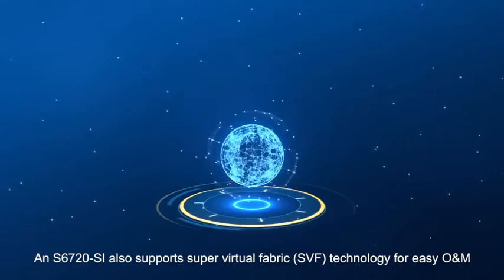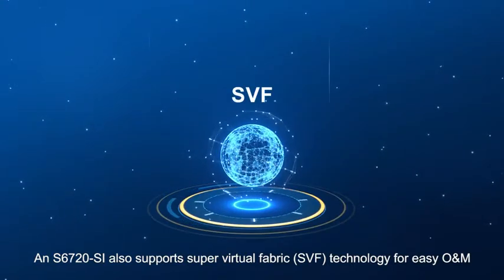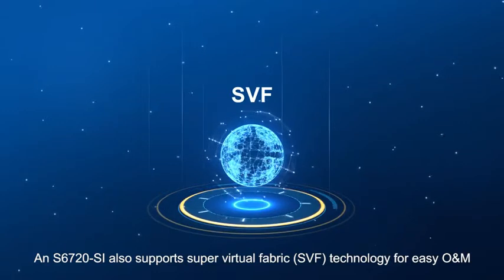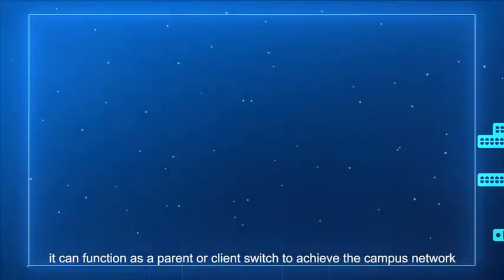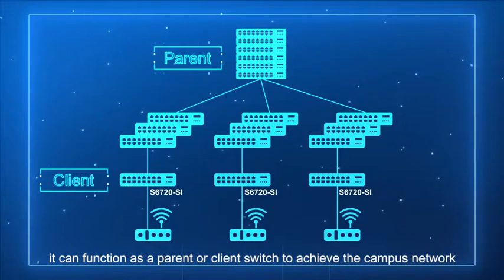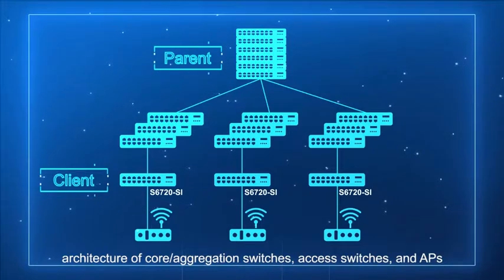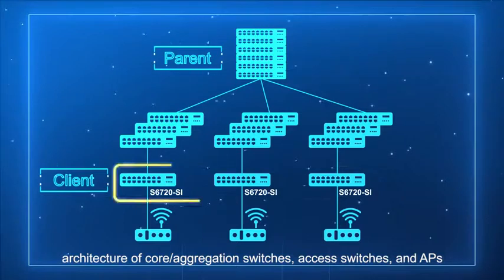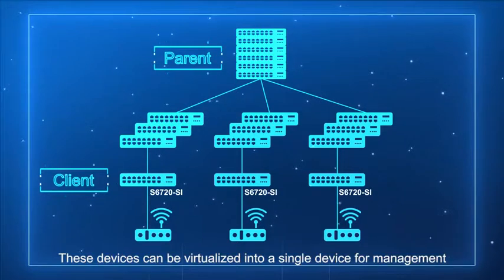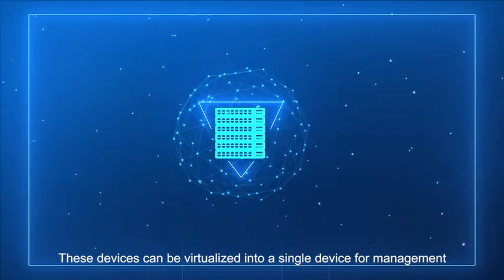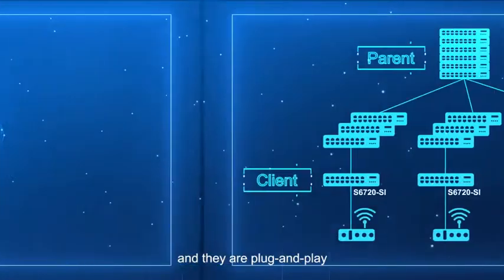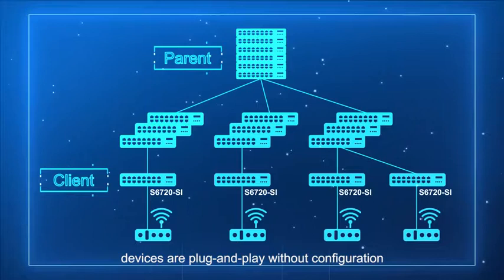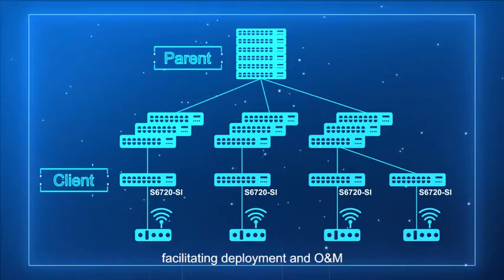The S6720-SI also supports Super Virtual Fabric technology for easy O&M. It can function as a parent or client switch to achieve the campus network architecture of core aggregation switches, access switches, and APs. These devices can be virtualized into a single device for management, and they are plug-and-play without configuration, facilitating deployment and O&M.